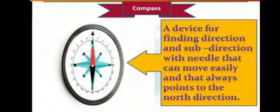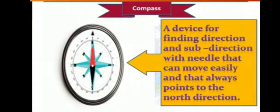Students, this is a compass — you can see the picture. A compass is a device for finding directions and subdirections. It has a needle that can move easily and always points to the North direction. This compass always shows the North direction, and with the help of this one direction, we can determine all the other directions. This compass is used in ships to determine the direction of the ship.